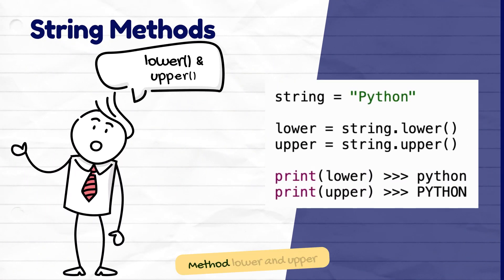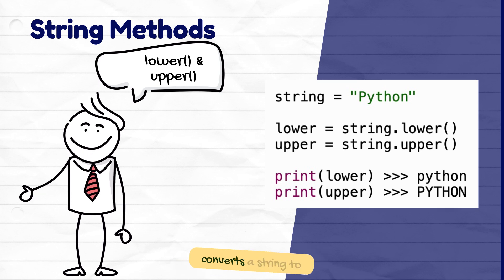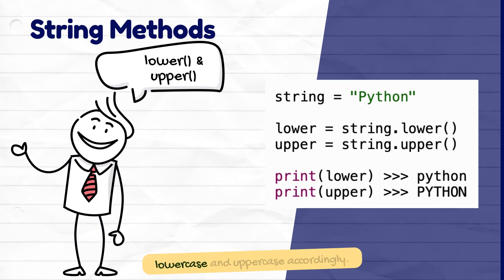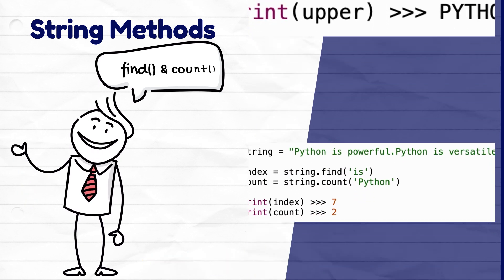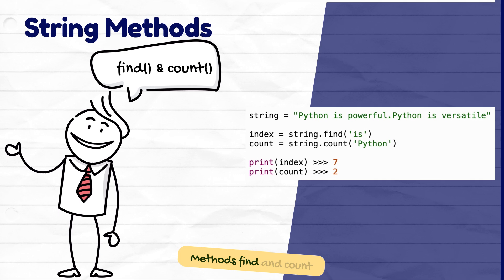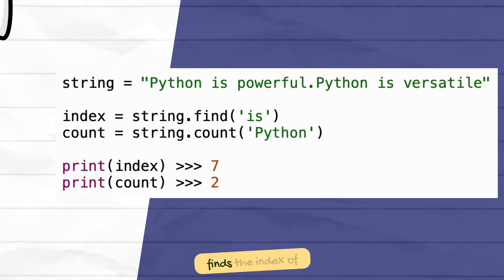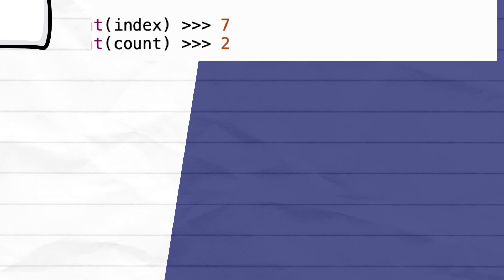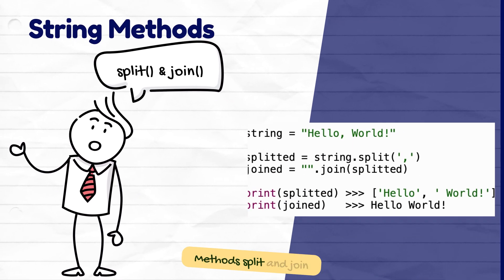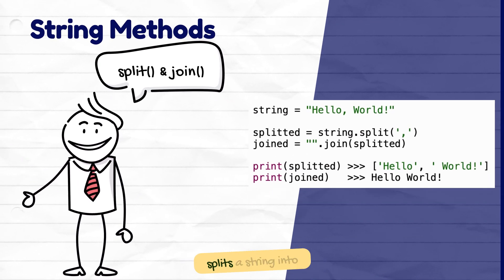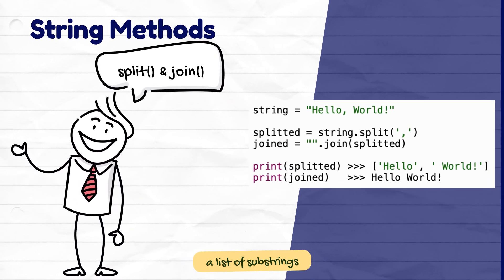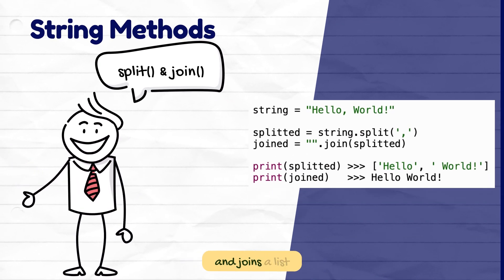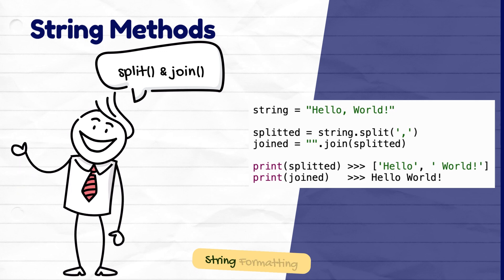The LOWER and UPPER methods convert a string to lowercase and uppercase accordingly. The FIND and COUNT methods find the index of a substring and count its occurrences. The SPLIT and JOIN methods split a string into a list of substrings and join a list of strings into one.